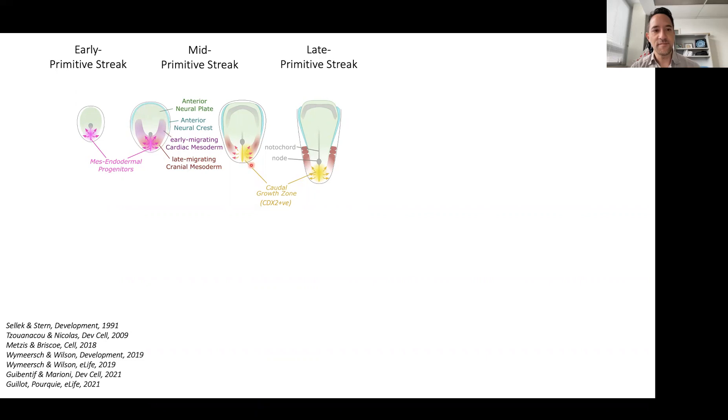But over time, mesodermal progenitors undergo a state change and they start upregulating CDX2, and they participate in the building of what's sometimes referred to as the chordal growth zone. Now, the chordal growth zone is a very proliferative part of the embryo.